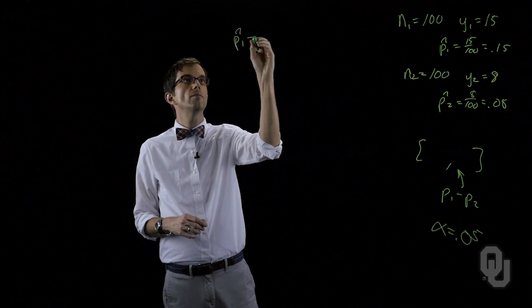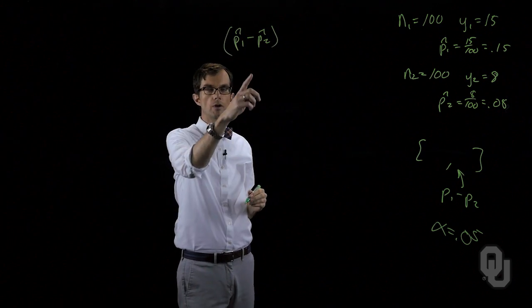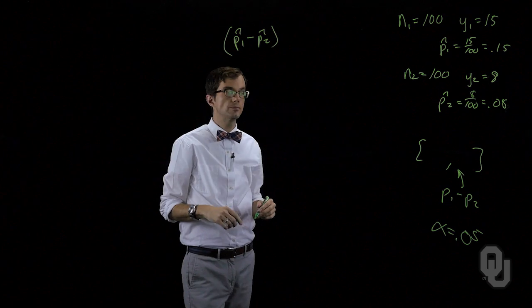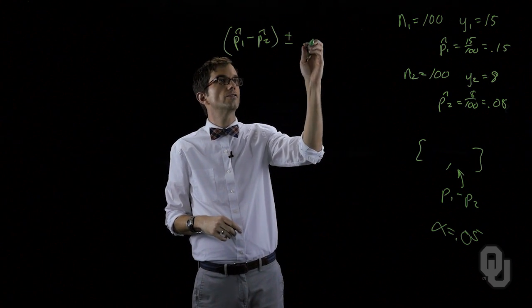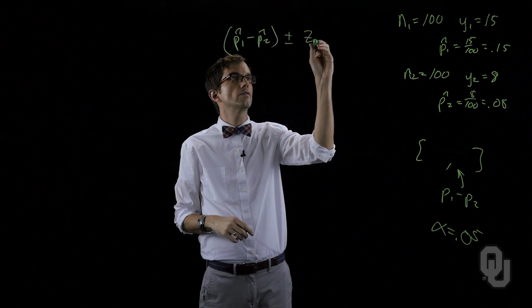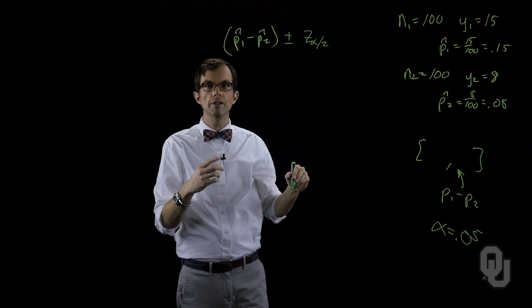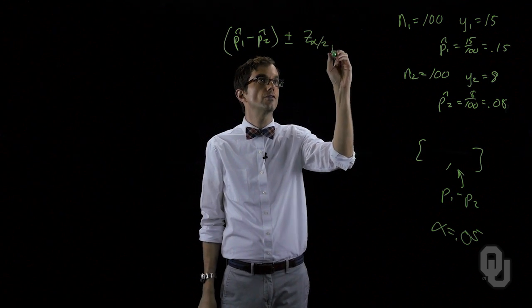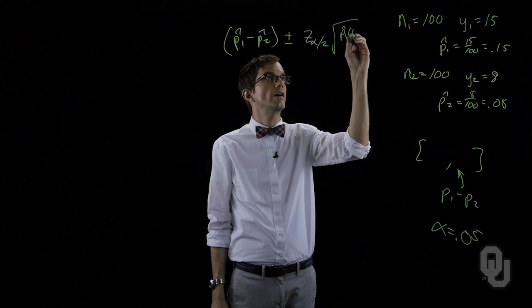It's P one hat minus P two hat. That's our point estimate. We're going to add to it and subtract from it a margin of error that's a function of variability, sample size, confidence. Here's our measure of confidence and here's our measure of variability in sample size. It is the standard deviation of our sampling distribution.